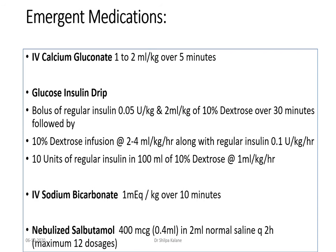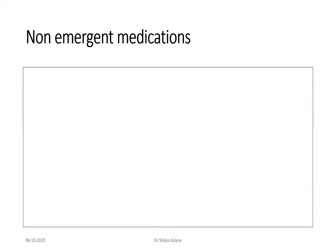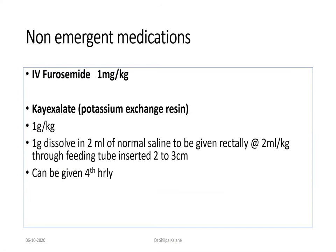IV sodium bicarbonate is another emergent medication but is useful only in cases of metabolic acidosis — without acidosis, bicarb will not help with transcellular shift of potassium. Nebulized salbutamol can be given at 400 mcg in 2 ml of normal saline every 2 hours for a maximum number of doses; its role in neonates is not yet clear but is one of the emergent treatments. Non-emergent medications include IV furosemide 1 mg/kg, and Kayexalate (potassium exchange resin) 1 g/kg dissolved in 2 ml of normal saline, given rectally at 2 ml/kg through a feeding tube inserted 2–3 cm, every 4 hours.